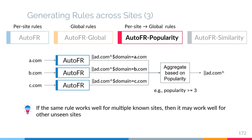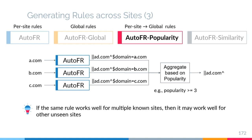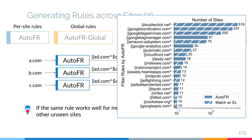The intuition is that if the same rule works well for multiple known sites, then it may work well for other unseen sites as well. We know this is true because there are very popular rules as plotted here for per-site rules we generated, and most of them are from domains like Google and Amazon.